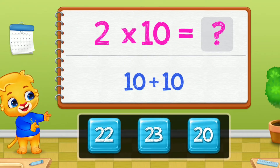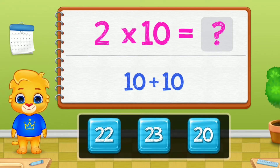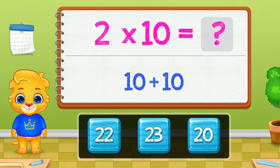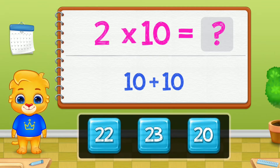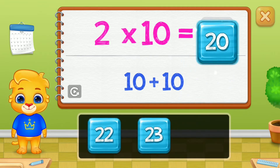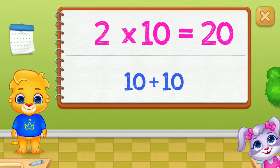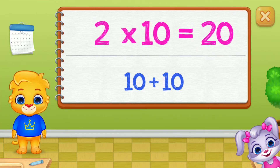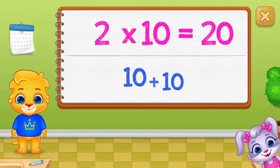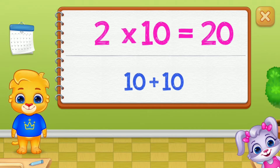If you can add numbers, you can multiply them. Two times ten is the same as adding ten. Two times twenty. Two times ten is just like ten plus ten equals twenty.